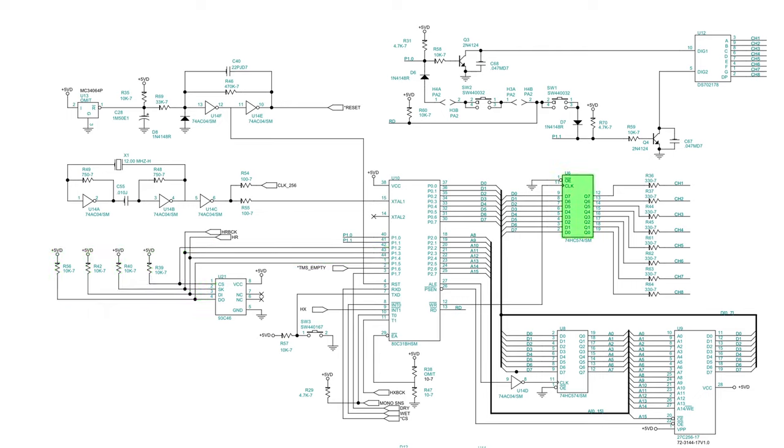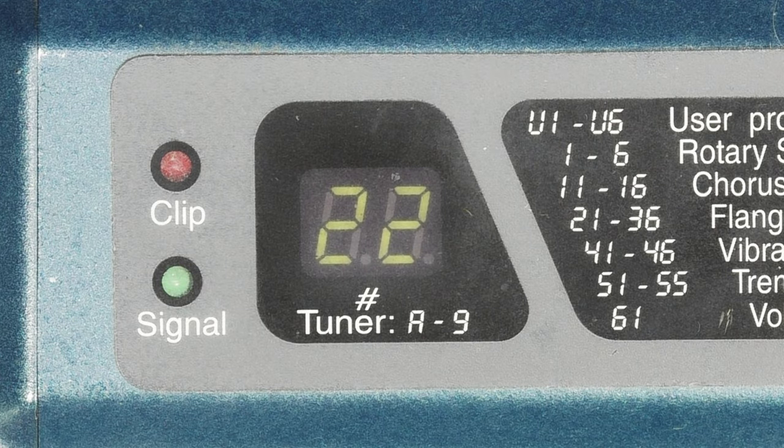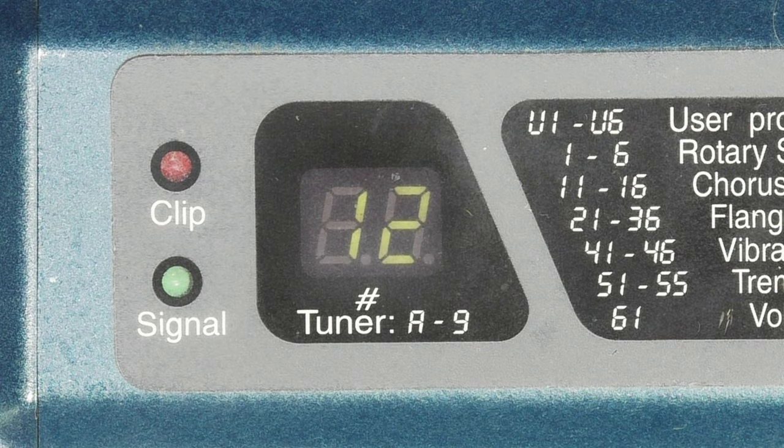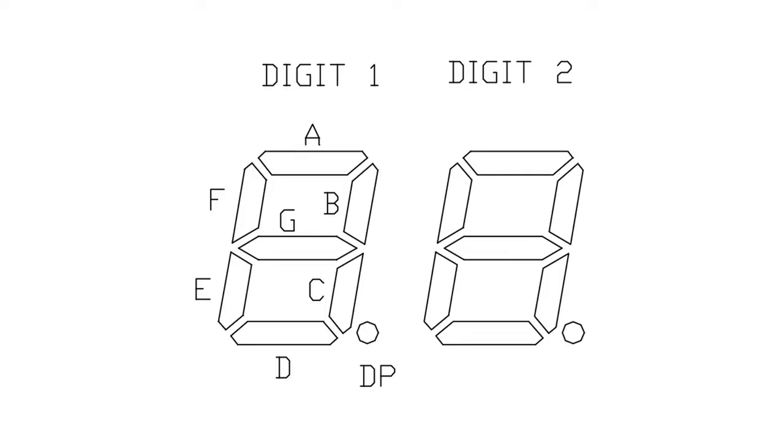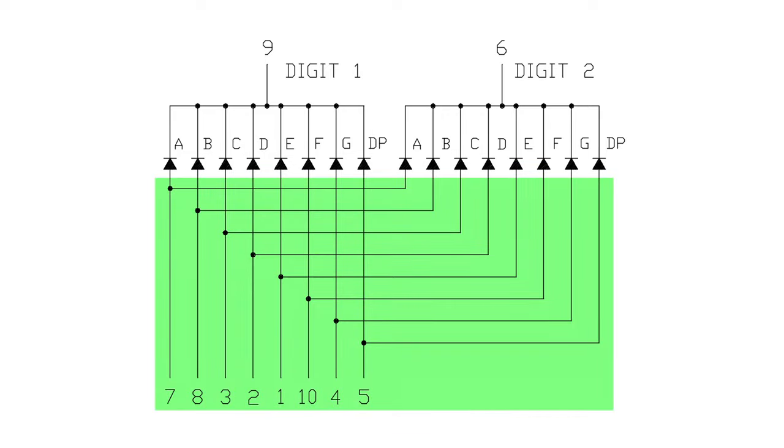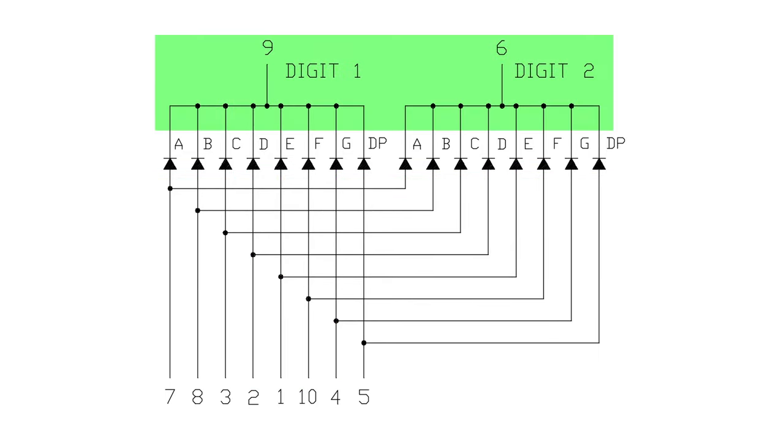There's another latch chip that captures the microcontroller's data bus depending on the write signal. The latch drives the anodes of the 7-segment LED display. This is how the microcontroller lights up the display segments. There are two digits in the display, and each digit is made up of 8 segments. The anodes of the two digits are wired in parallel, segment for segment, and the cathodes of each digit are wired in common.